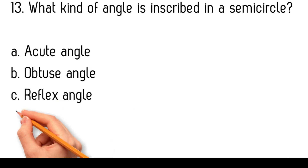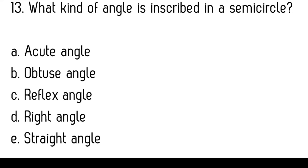What kind of angle is inscribed in a semicircle? Acute angle, obtuse angle, reflex angle, right angle, straight angle. An angle inscribed in a semicircle is always a right angle. This is a consequence of the inscribed angle theorem, which states that an angle inscribed in a semicircle is a right angle, ninety degrees. Therefore, the correct answer is right angle.